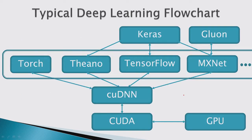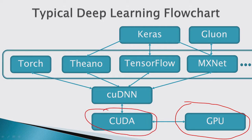Here is a typical deep learning setup. You have your GPU, controlled using CUDA. There is also a library called cuDNN — a bit higher level than CUDA — specifically for deep neural networks. CUDA enables any kind of computations, while cuDNN is specifically optimized for neural networks.